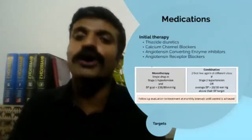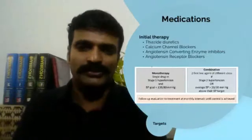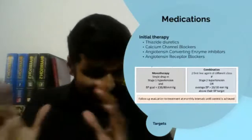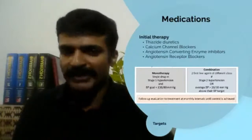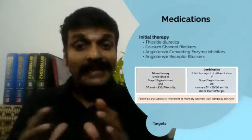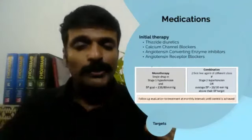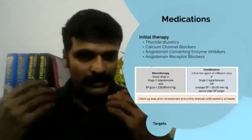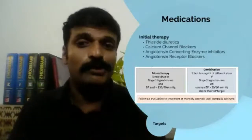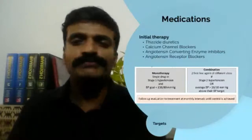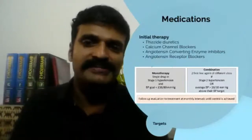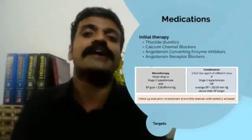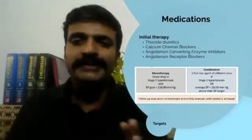Thiazide diuretics are very safe first-choice antihypertensives — give them in the morning or at maximum noon, never in the evening, to avoid the patient waking up at night to pass urine. Hydrochlorothiazide can be started at 12.5 mg and chlorthalidone at 6.25 mg per day, gradually building up. Calcium channel blockers have been used for a long period and are very safe. Newer ones like cilnidipine and benidipine have fewer side effects compared to amlodipine, which can occasionally produce pedal edema or rarely bradycardia and heart block.